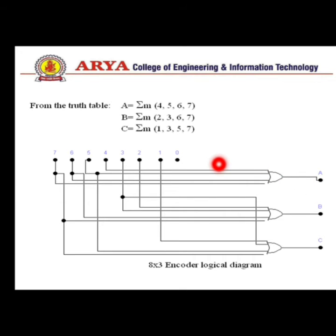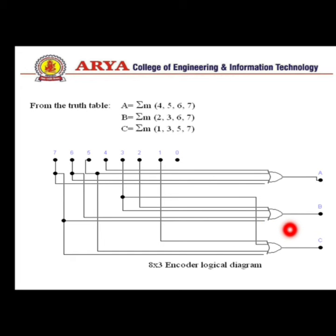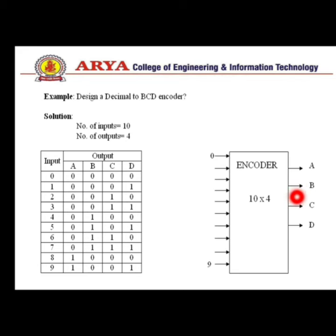When A equals 1, the values 4, 5, 6, and 7 are 1. When B equals 1, values 2, 3, 6, and 7 are 1. When C equals 1, values 1, 3, 5, and 7 are 1. So A is connected to inputs 4, 5, 6, and 7 through a 4-input OR gate; B is connected to inputs 2, 3, 6, and 7 through a 4-input OR gate; and C is connected to inputs 1, 3, 5, and 7 through a 4-input OR gate. This is the 8-to-3 encoder.